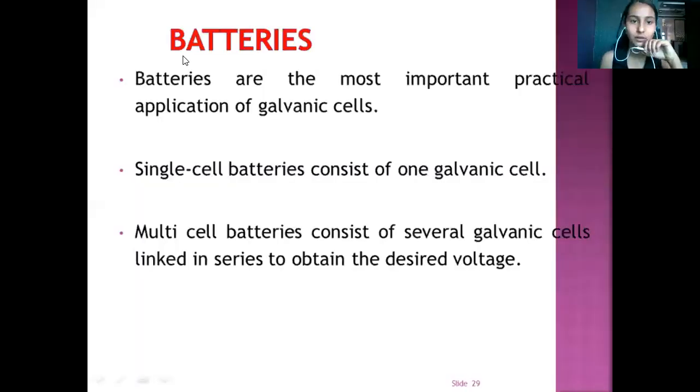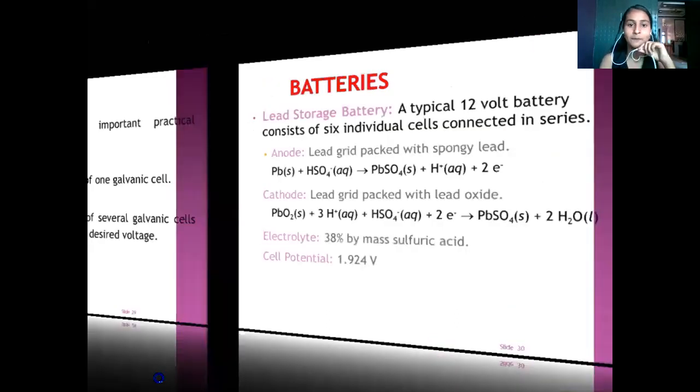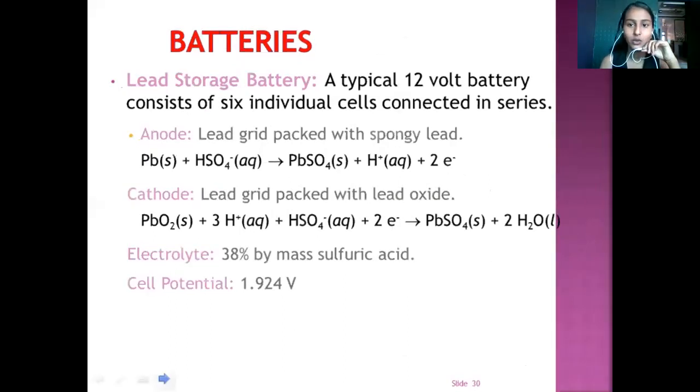Now I am going to tell about batteries. Batteries are the most important practical application of galvanic cell. Single batteries have one galvanic cell whereas multiple batteries consist of several galvanic cells which are linked in series to obtain desired voltage. Lead storage battery is the kind of battery. A typical 12 volt battery consists of six individual cells connected in series. Anode, lead grid packed with spongy lead where the reaction takes place as Pb solid plus H2SO4 gives PbSO4 plus H plus plus 2 electrons. Cathode, lead grid packed with lead oxide. PbO2 plus 3H2SO4 plus 2 electrons gives PbSO4 plus H2O. Electrolyte is 38% by mass sulfuric acid. Cell potential is 1.924 volt.